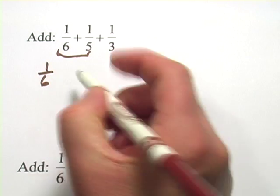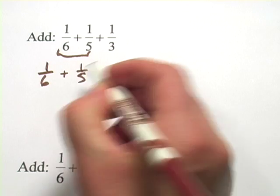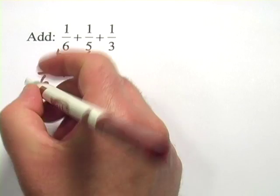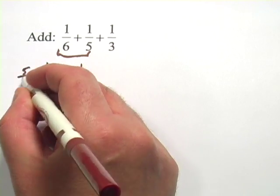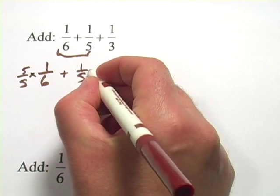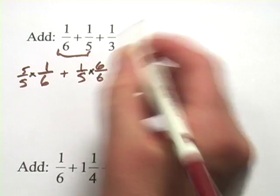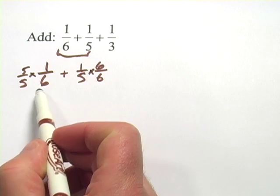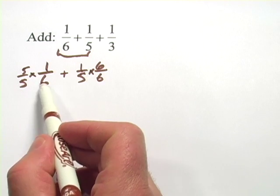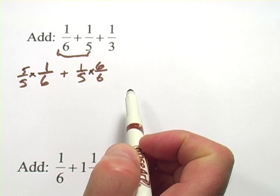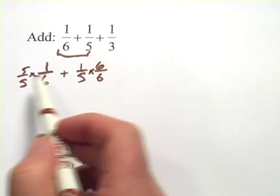In this case, I have 1 sixth and 1 fifth. I think I'm going to multiply the 1 sixth by 5 over 5 and the 1 fifth by 6 over 6. What I did was just stole that number from the other fraction. When I do that, I get 5 times 6 on the bottom. They'll be common denominators.